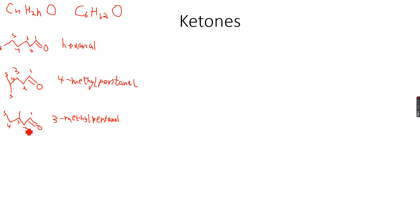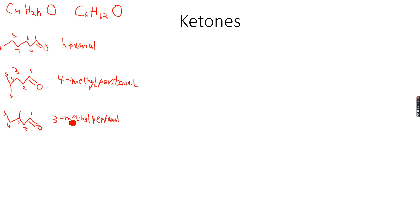Does 3-methylpentanal have any stereoisomers? It does not have any carbon-carbon double bonds, so no geometric isomers. But it does have a chiral center. Looking at the 3rd carbon atom, it is attached to 4 different groups: a methyl group, a hydrogen, an ethyl group, and the CH2CHO group on the right. So it will exist as 2 optical isomers, and we multiply this by 2.